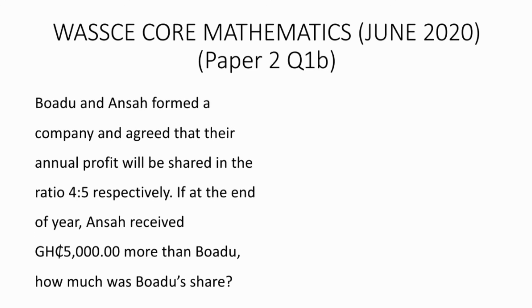Problem B: Bodo and Ansa formed a company and agreed that their annual profit will be shared in the ratio 4 is to 5 respectively. If at the end of the year Ansa received 5000 Ghana cedis more than Bodo, how much was Bodo's share?